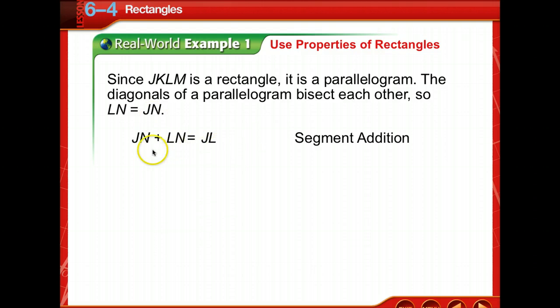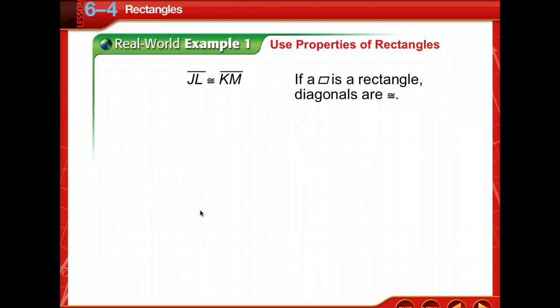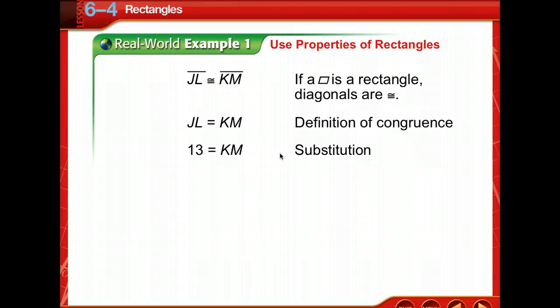By the segment addition property, JN plus LN equals JL. Since JN equals LN, we can substitute: 2 times LN equals JL. Given that LN is 6.5, we know JL equals 13. Since the diagonals of a rectangle are congruent, by definition of congruence they're also equal. Therefore, KM equals 13 feet.